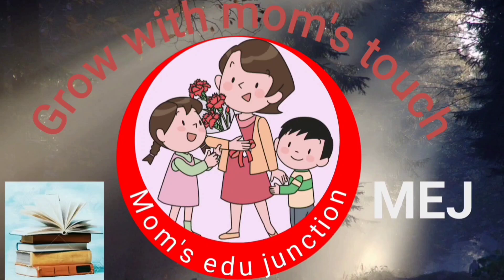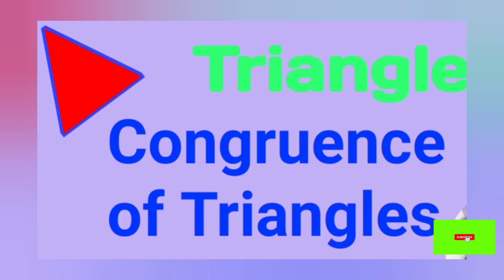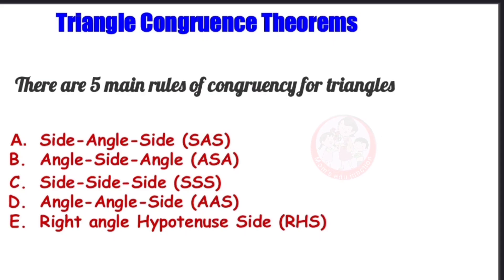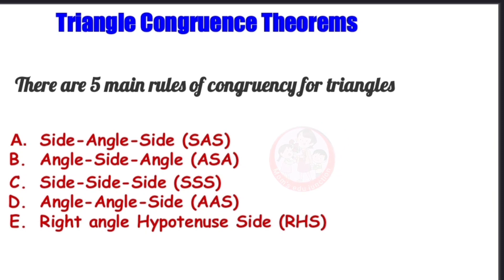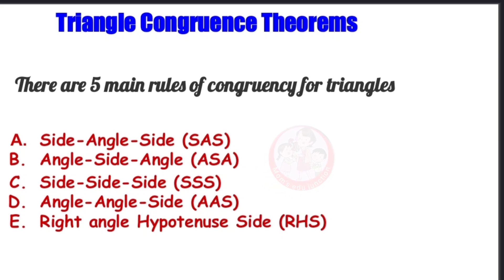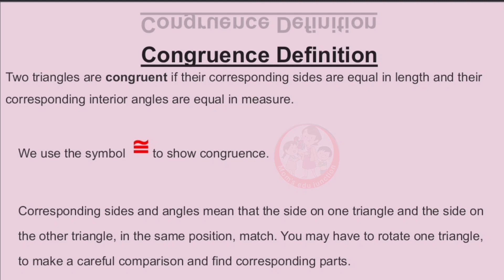Hello students, welcome to my channel. Today we are going to learn congruence of triangles. There are five main rules or theorems of congruence for triangles: first, Side Angle Side; second, Angle Side Angle; third, Side Side Side; fourth, Angle Angle Side; and fifth, Right Angle Hypotenuse and Side. In this session, we will only talk about the first three rules.